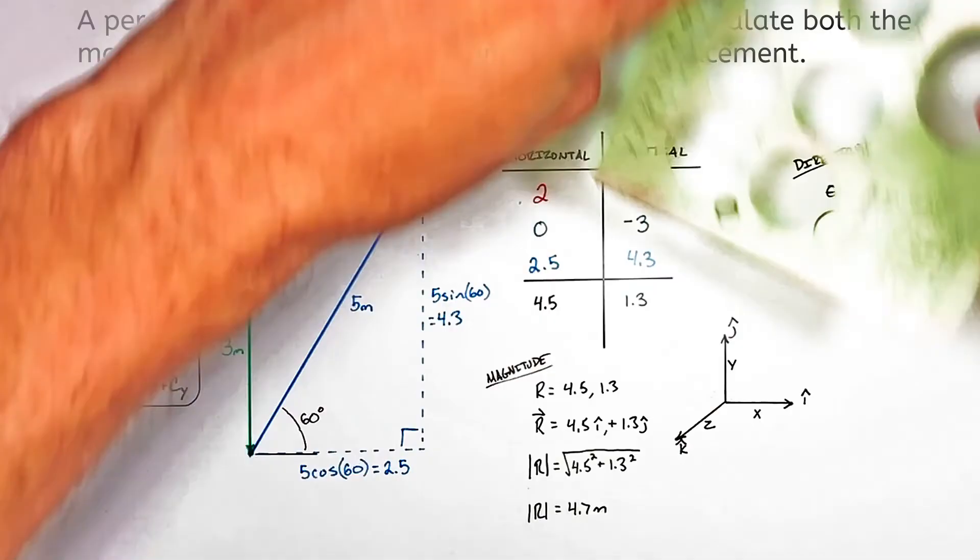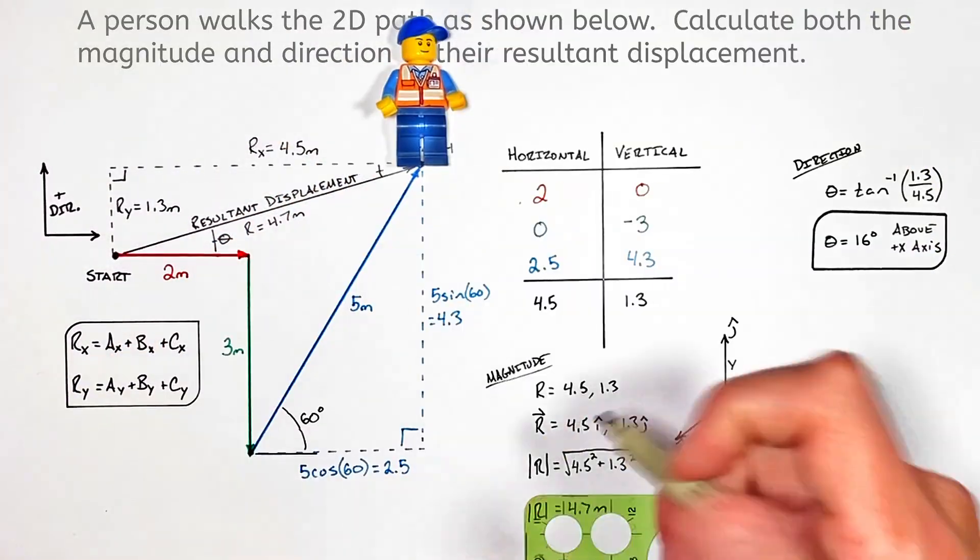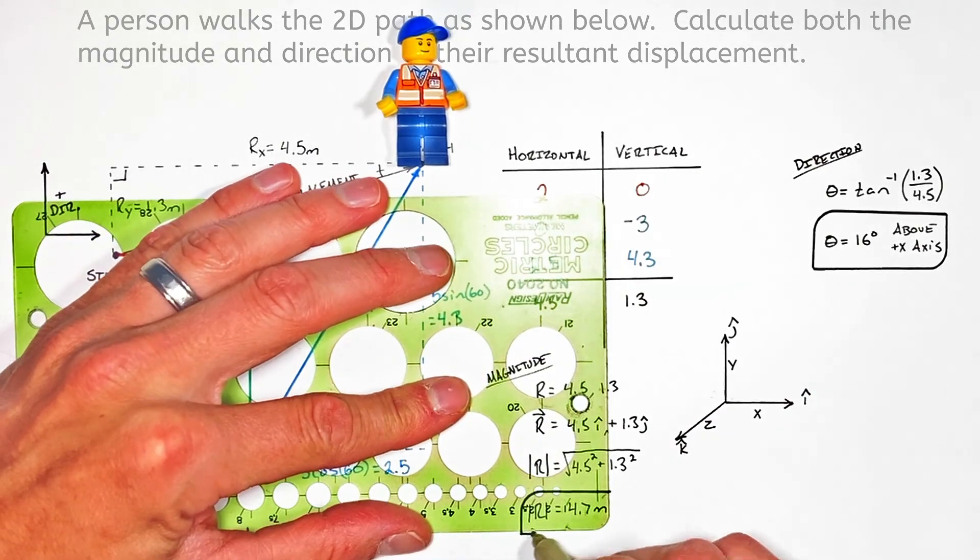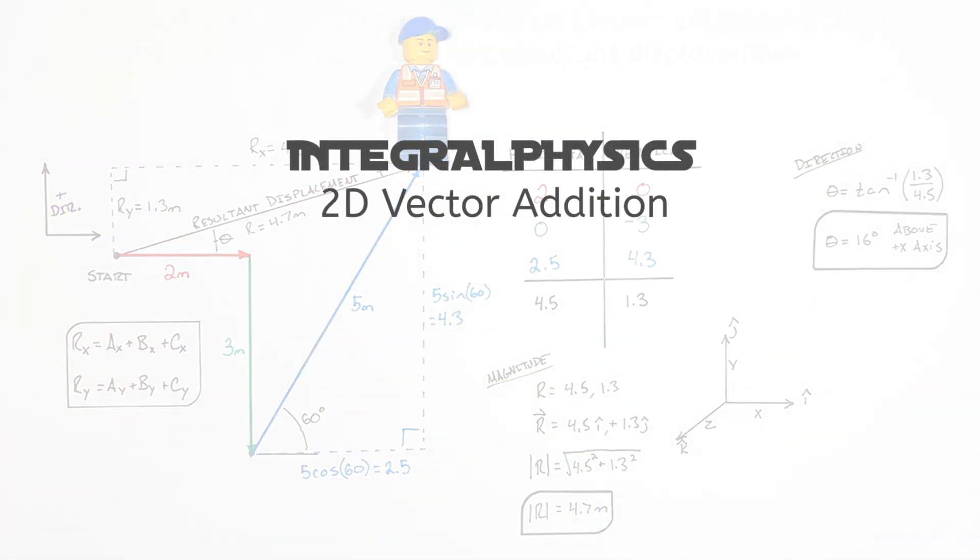This has been how to add vectors together to find both the magnitude and direction of a resultant vector. I hope you found this useful. And on that note, that's all for now.